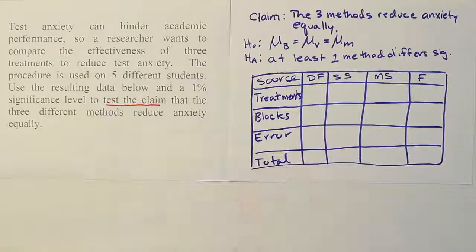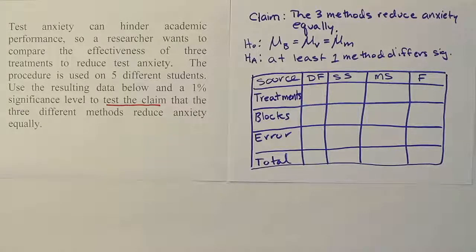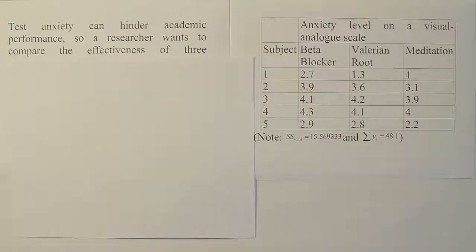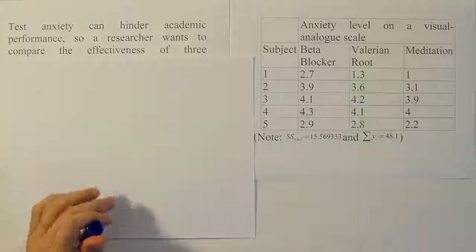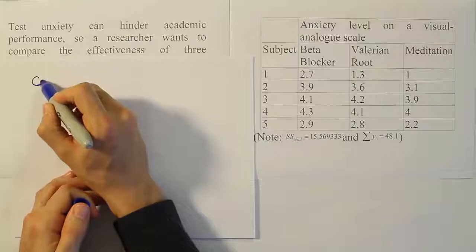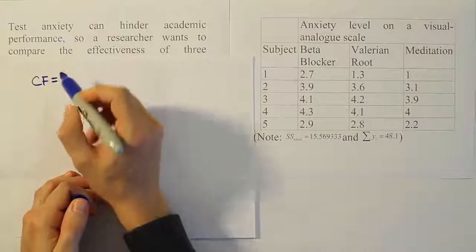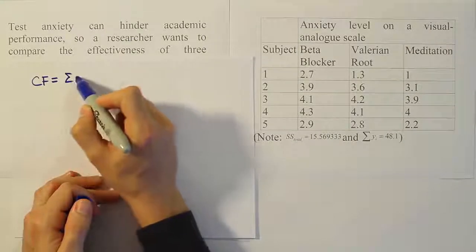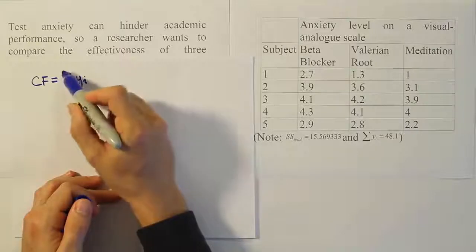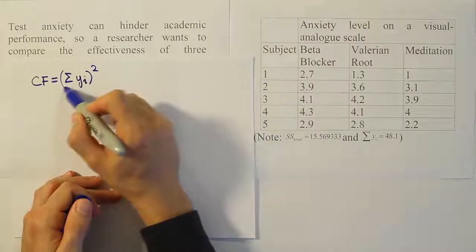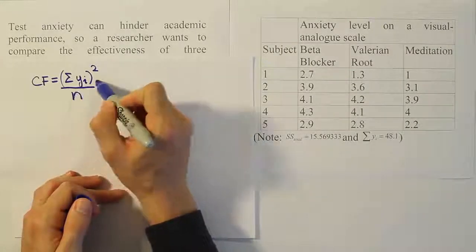Our table is drawn and we'll fill it in with the data we calculate in the next step. We're going to get some data worked out on the side and come back to fill in this table. The first thing we're going to do in the data step is compute the correction factor, CF.